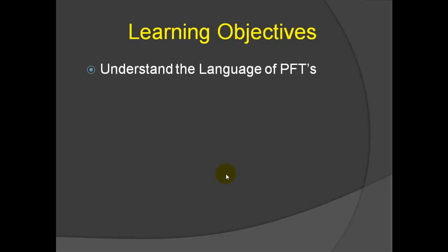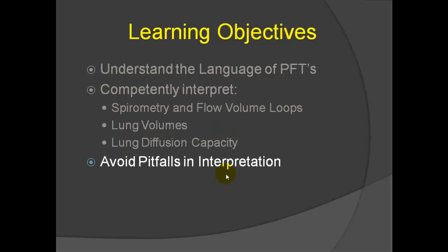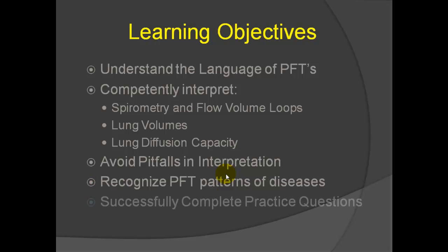Our objectives in the four-part series are to understand the language of pulmonary function tests, competently interpret spirometry and flow volume loops, measurement of lung volumes and lung diffusion capacity, avoid pitfalls in pulmonary function interpretation, and recognize pulmonary function test patterns of diseases. At the end of the course, in the fourth part, we have some practice questions that illustrate practical application of pulmonary function tests.